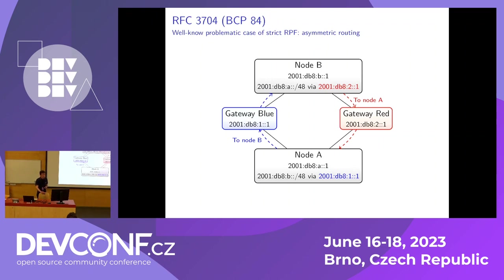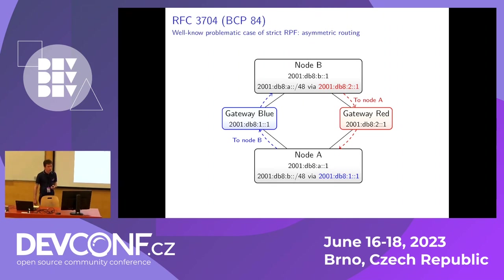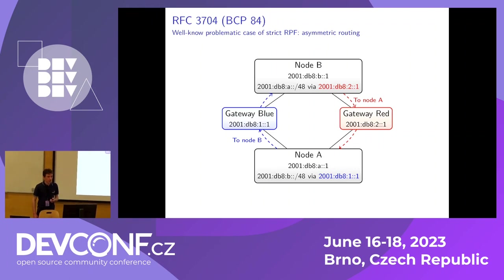The problem is that it has always been clear that strict RPF would break asymmetric routing. Here, for example, we have two nodes, node A and B. They can communicate between each other through two gateways, blue and red, but node A is configured to only use gateway blue, and node B is configured to only use gateway red. So when node B receives the packet from node A from gateway blue, it will do the strict RPF check and realize that normally node A is routed through gateway red, although it receives the packet from gateway blue, so it will drop the packet. Strict RPF has actually broken communication between our two nodes.